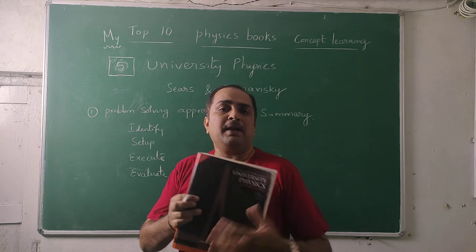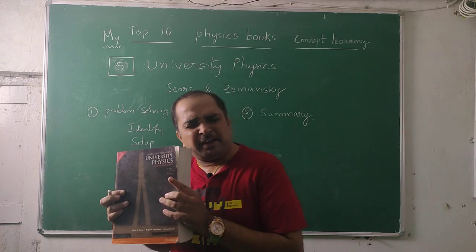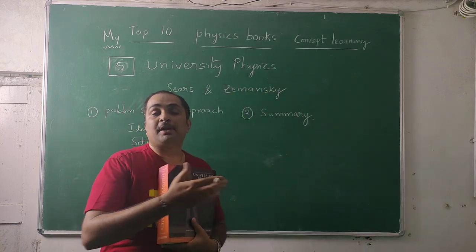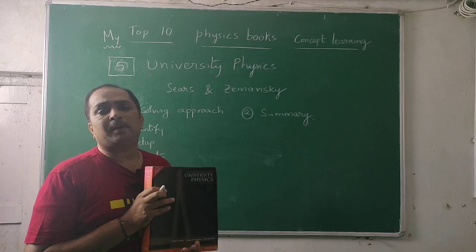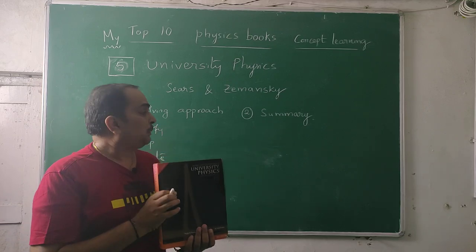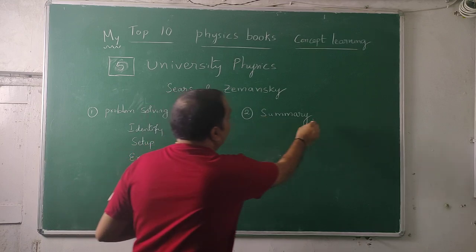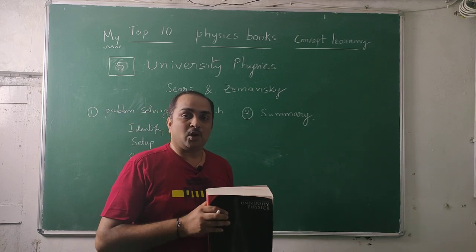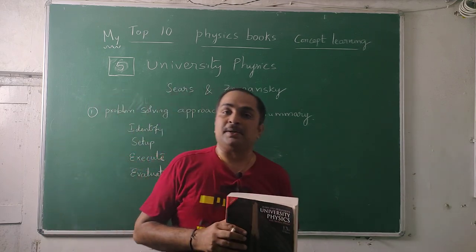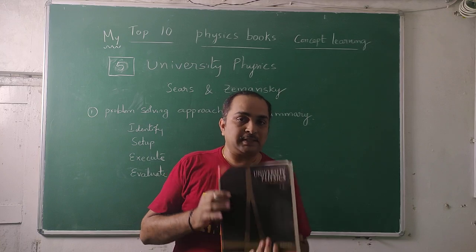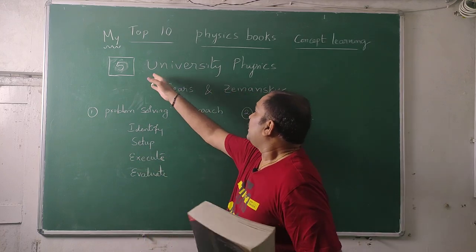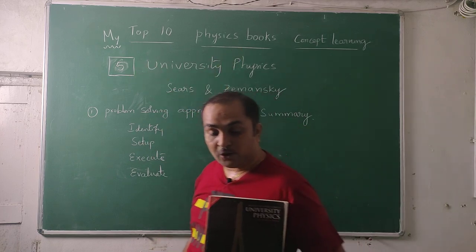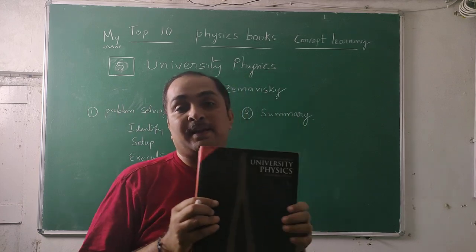This book also has a low-price Indian edition and is widely available — unlike some of the other books I've mentioned, which may be rare. At the end of each chapter, within about one page front and back, he gives a complete summary of what you've learned — sufficient for revision. This is University Physics, and the numbering I've given is just to create a structure; each book has its own purpose.